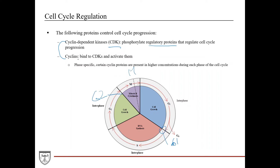Then you have cyclins, which bind to CDKs and activate them. They're phase-specific: you have a G1 cyclin, a G1-S cyclin, an S cyclin, a G2 cyclin, and an M cyclin. These phase-specific cyclins are present in higher concentrations during their corresponding phase of the cell cycle.